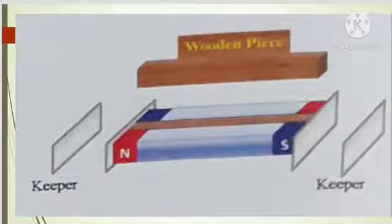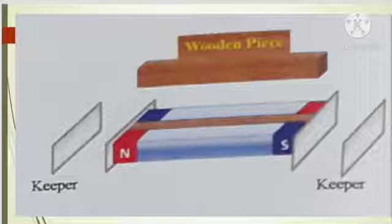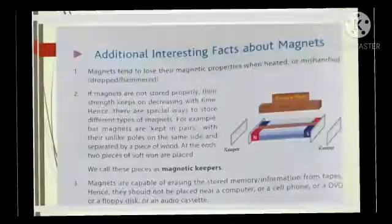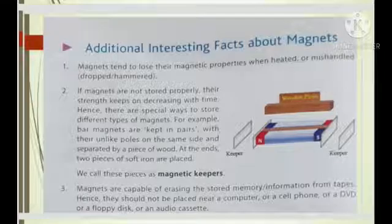What you are watching here is a setup that is known as Magnetic Keeper. If magnets are not stored properly, their strength keeps on decreasing with time. Hence, there are special ways to store different types of magnets. For example, bar magnets are kept in pairs with their unlike poles on the same side and separated by a piece of wood. At the ends, two pieces of soft iron are placed as you are watching in the diagram. Now, this whole setup is known as the Magnetic Keeper. So in this way, we can keep the bar magnets powerful for a longer duration of time.